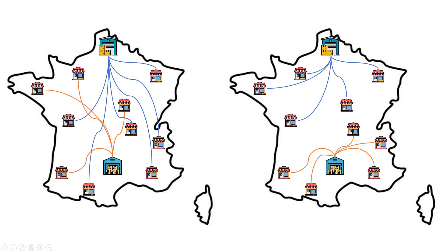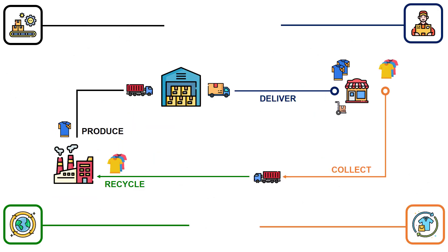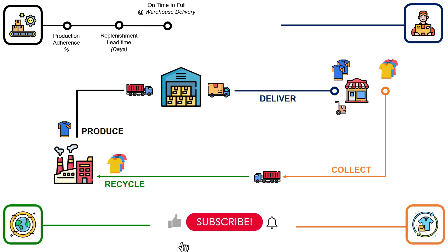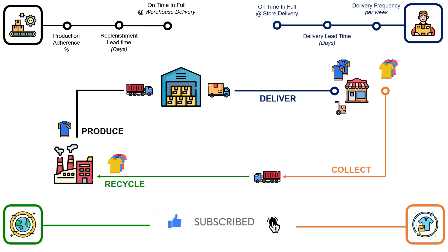Now that you have redesigned your network, you can use data to monitor the performance. At the production level, you want to ensure that you are producing what has been expected and you are replenishing your central warehouse on time. For the store delivery, you want to measure the delivery frequency, but also calculate the lead time between when an order is created and delivered to the store. The overall performance is calculated by the on-time in full (OTIF) KPI, which measures the percentage of orders that have been delivered on time.